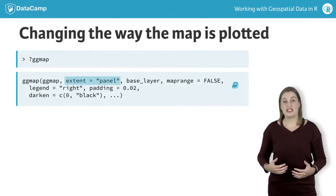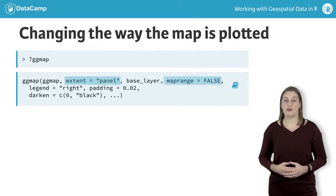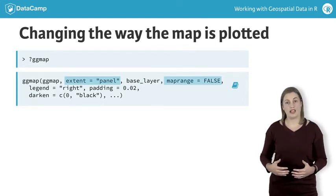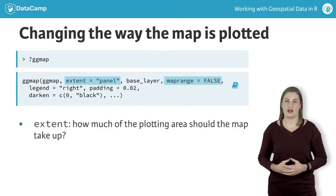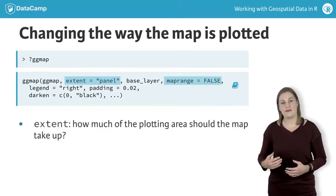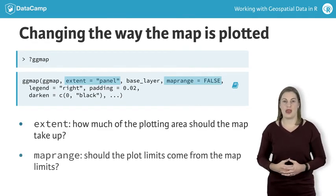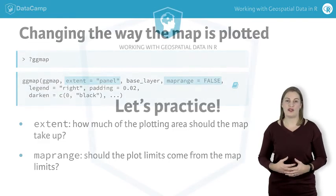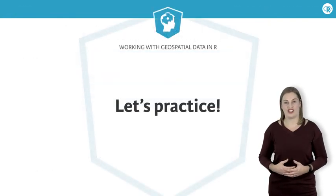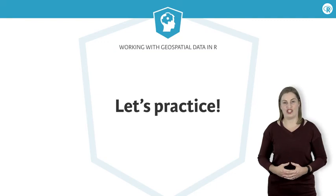The extent and map_range arguments can also be useful when the map and data don't quite share the same range. Extent controls how much of the plotting area the map takes up, and map_range controls whether the map or the data should control the plotting limits. You'll see an example of these in action in the final section of the chapter. We'll see you next time.